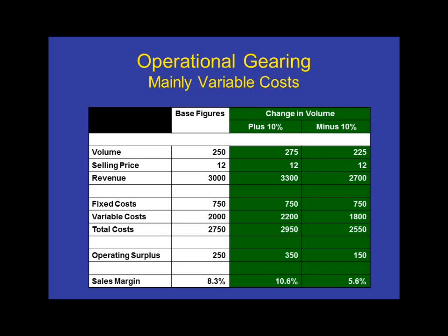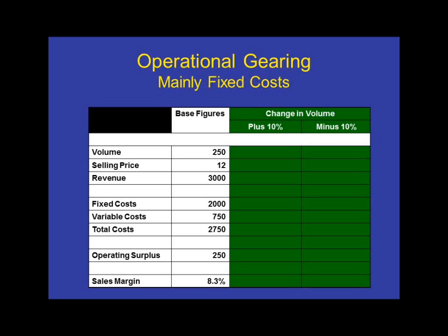Now we're going to have a look and see what would happen if the cost mix was the other way around. In this case, the fixed costs amount to $2,000 and the variable costs to $750. Total cost is still the same at $2,750, so our base figures still show a sales margin of 8.3%.